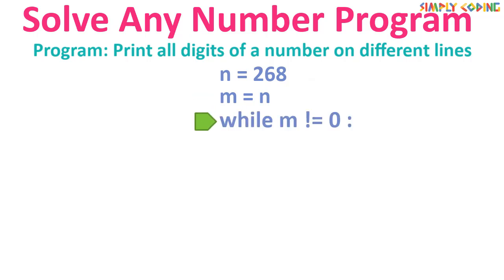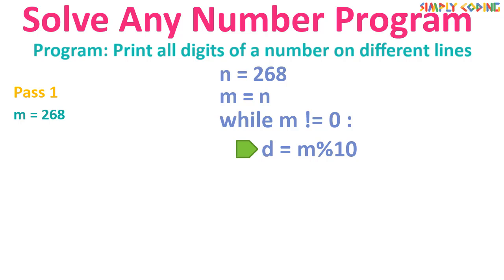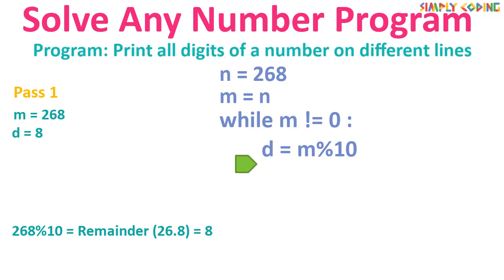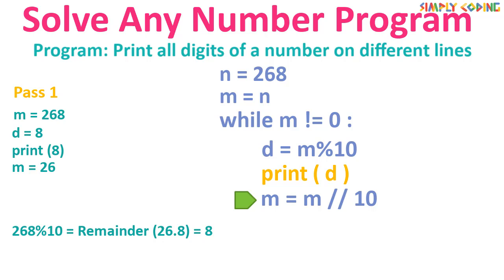We are going to use a while loop to break the number into digits. We set up a while loop that runs until m is not zero. Inside the loop, we first extract the rightmost digit using the remainder operator with 10: `d = m % 10`. This divides the number by 10 and gives the remainder, which is the last digit of the number.